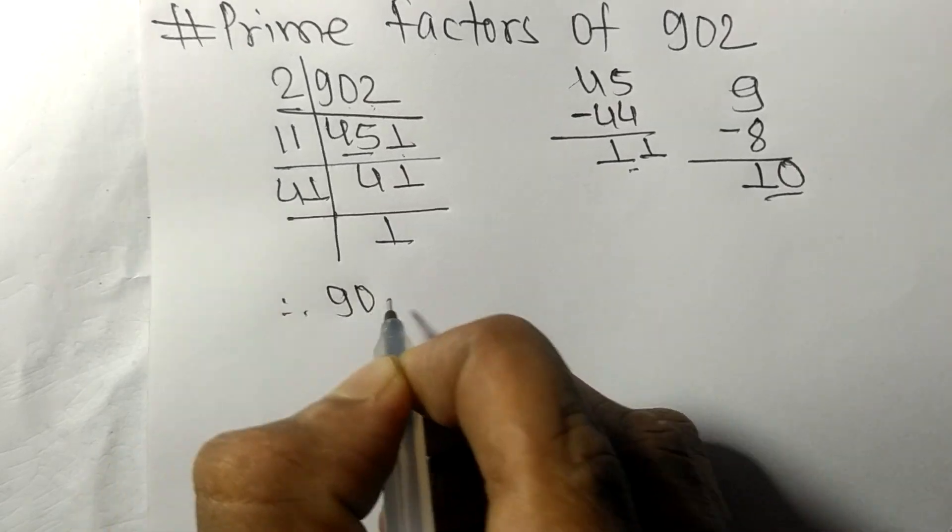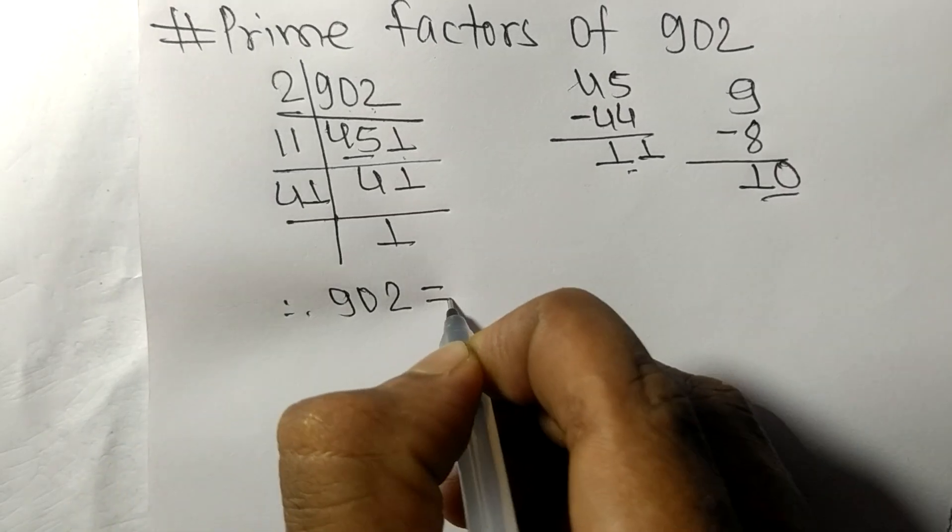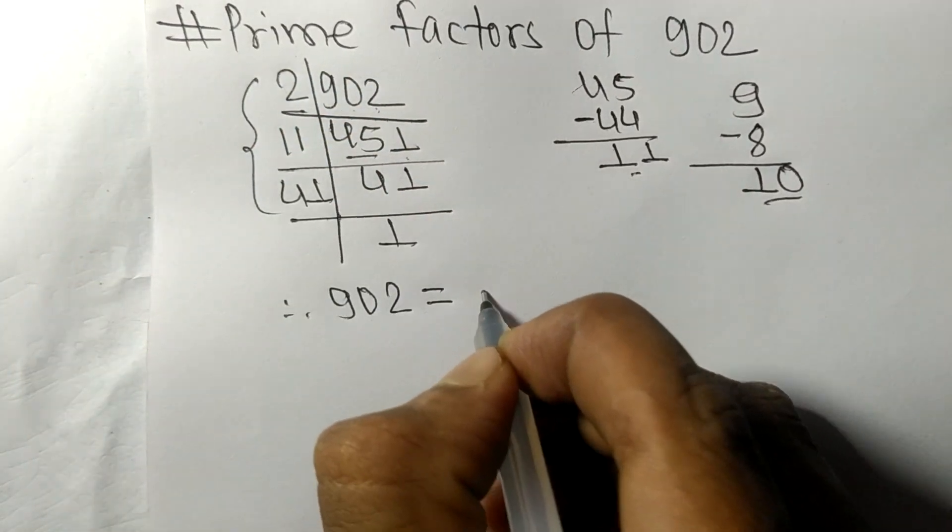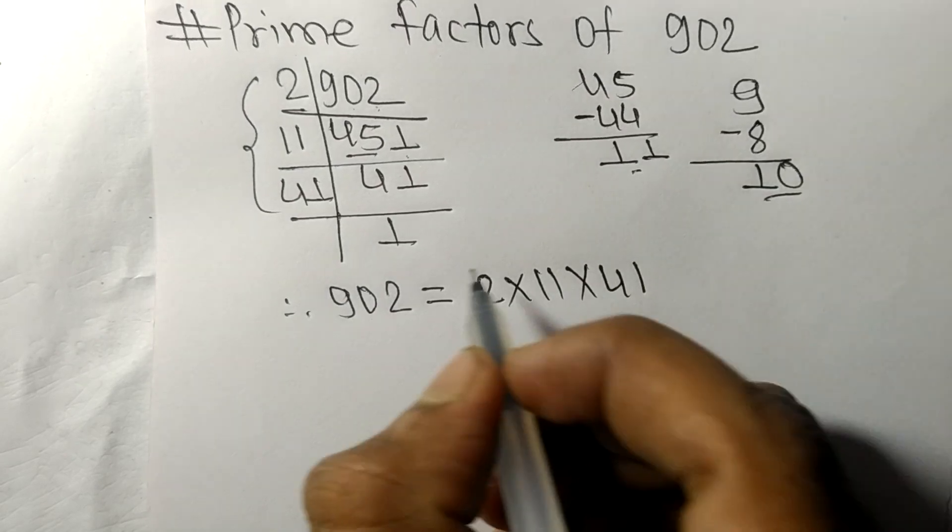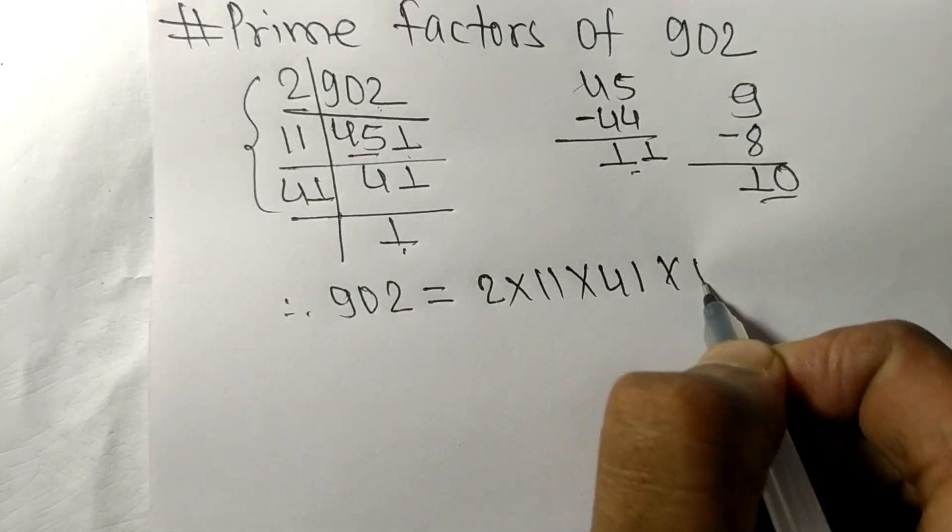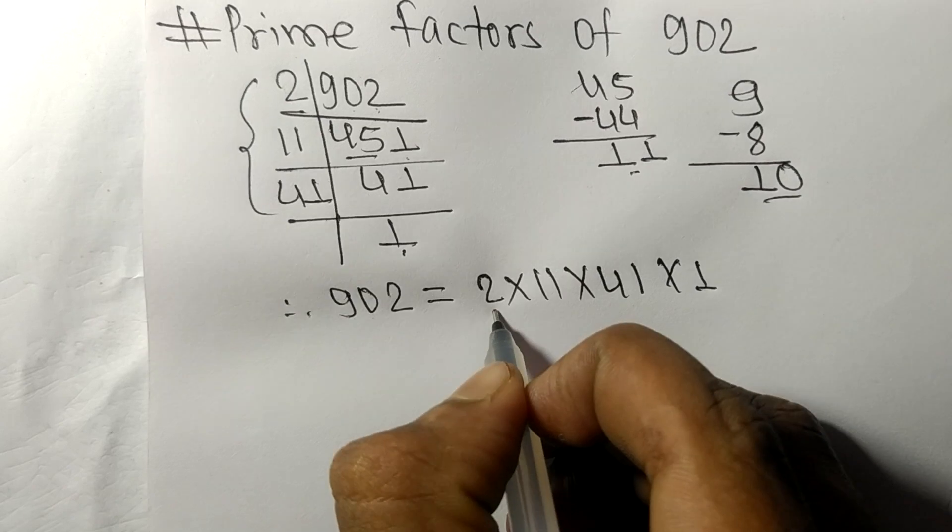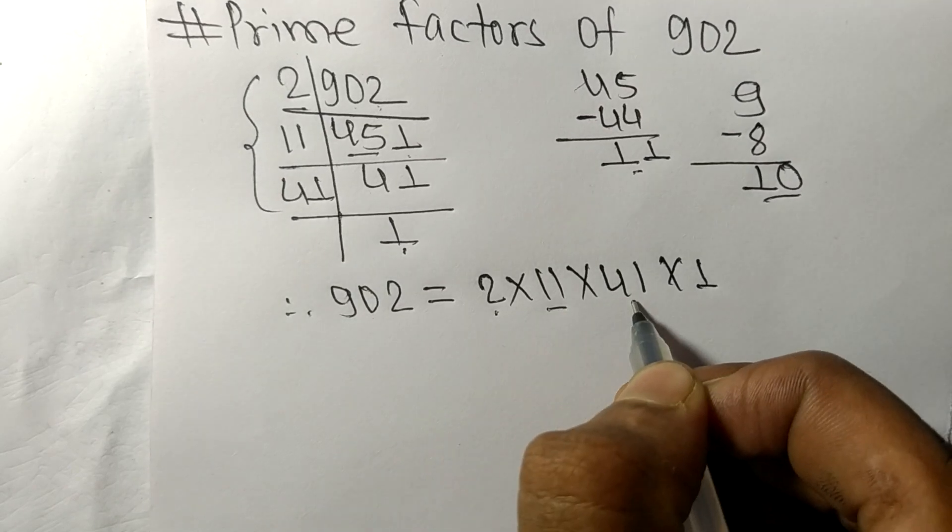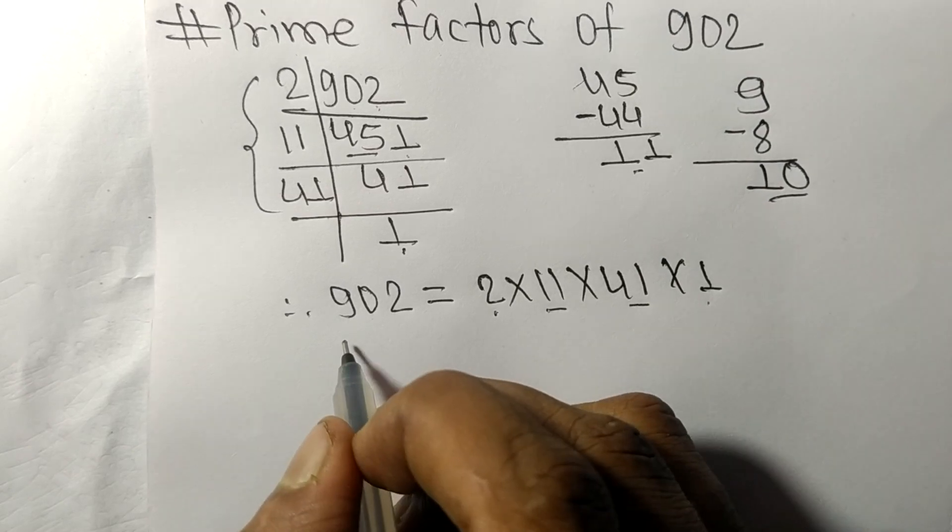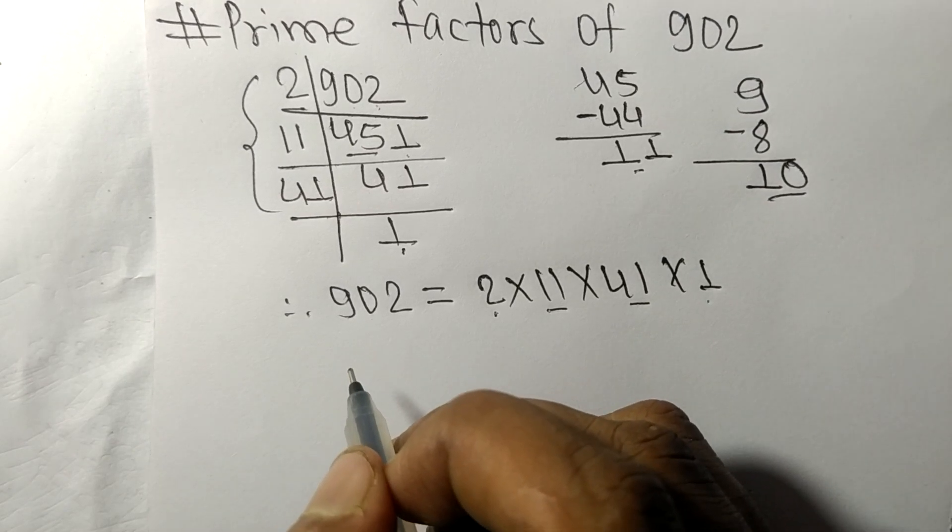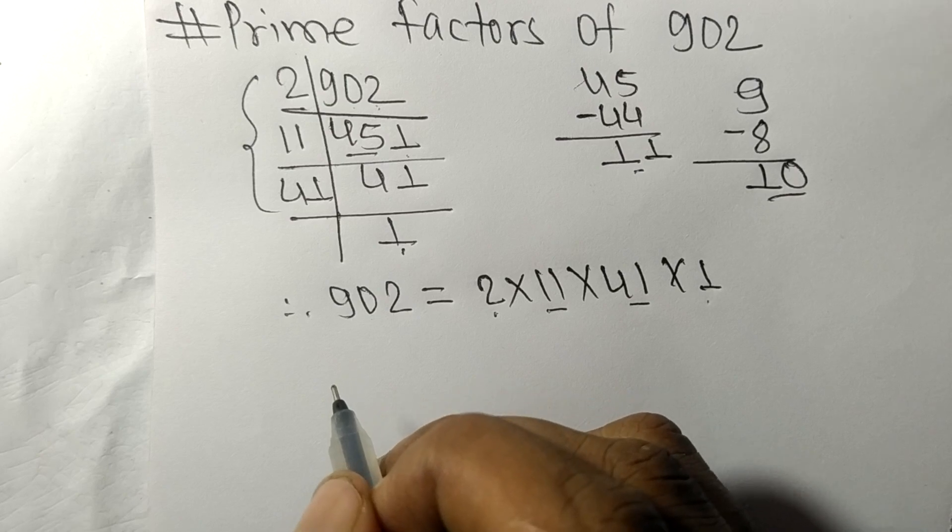Therefore, 902 is equal to 2 times 11 times 41 times 1. So 2, 11, 41, and 1 are the prime factors of 902. So this much for today, and thanks for watching.